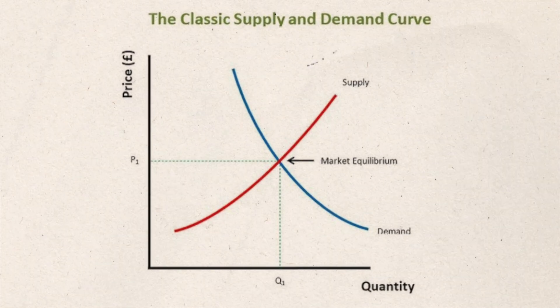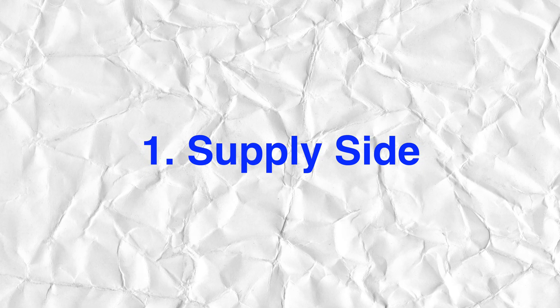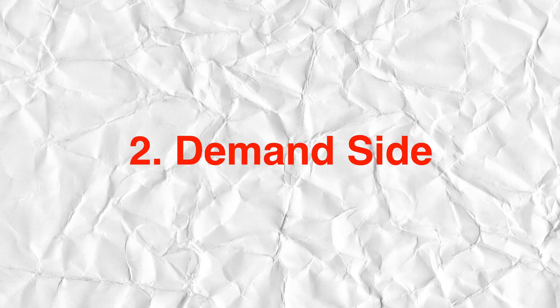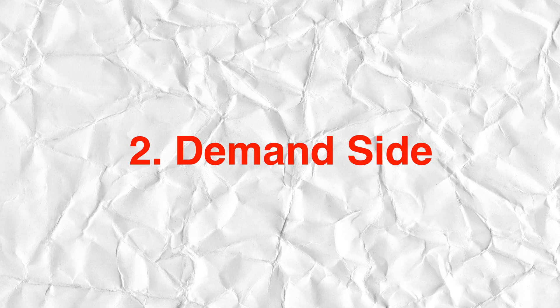Remember, the price of any asset is determined by its demand and supply. In tokenomics, that is also true. We're first going to talk about supply tokenomics — the supply that's controlled by the team and how they release it. Then we're going to look at the demand side: what is the demand for this asset, this cryptocurrency?